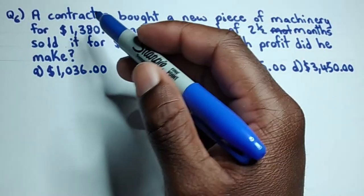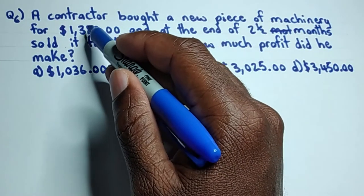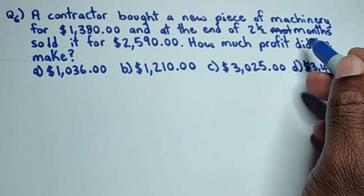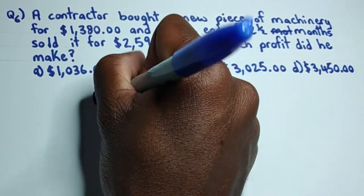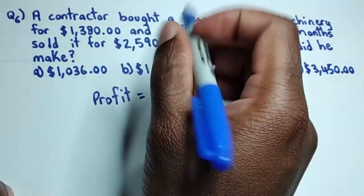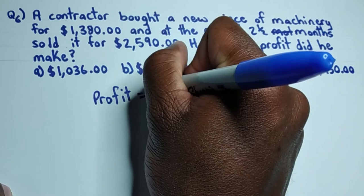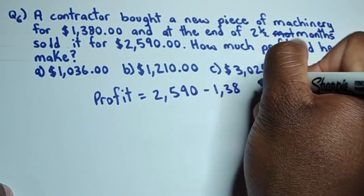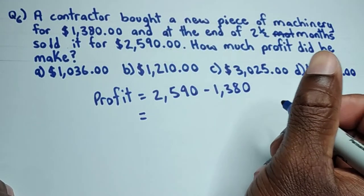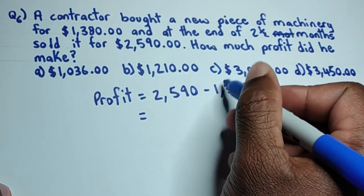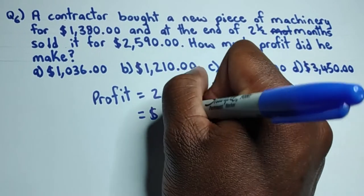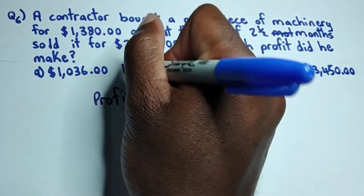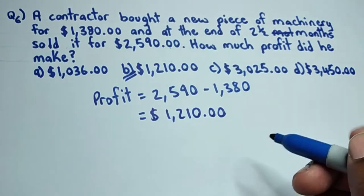Let's see what we have in question six. A contractor bought a new piece of machinery for $1,380 and at the end of two and a half months sold it for $2,590. How much profit did he make? The profit equals the selling price minus the purchase price: $2,590 minus $1,380 equals $1,210. The correct answer for question six is B.